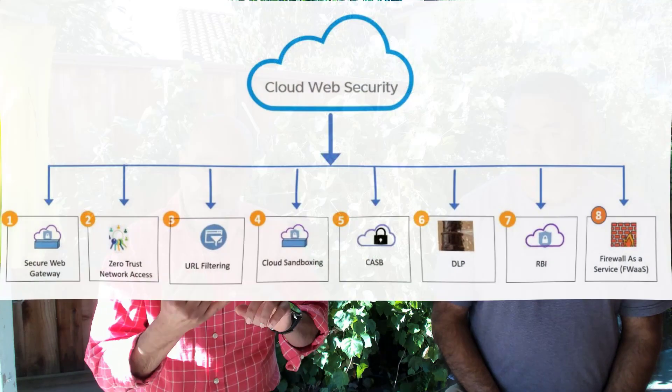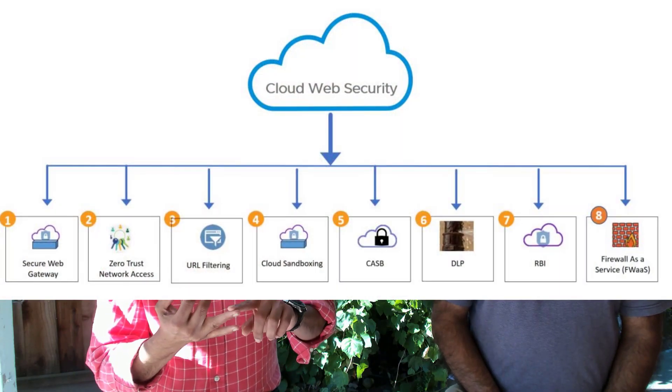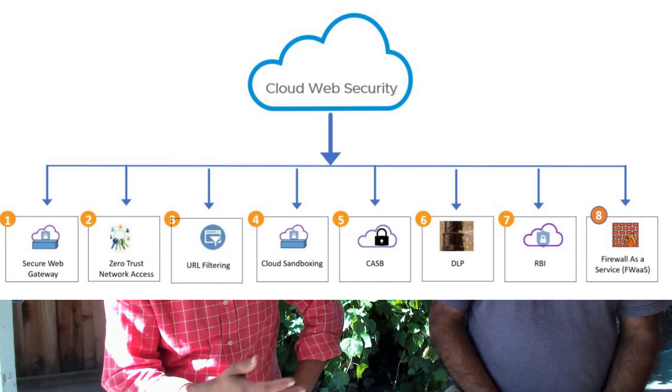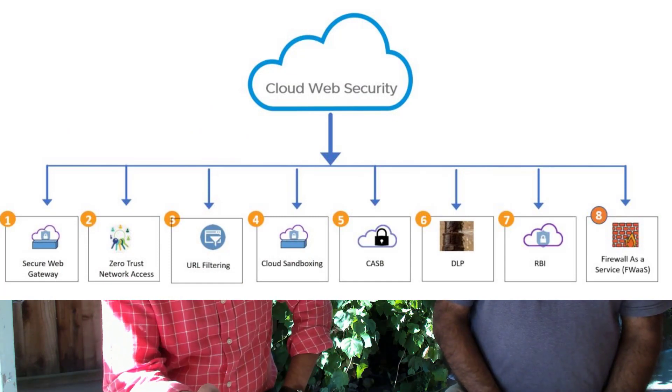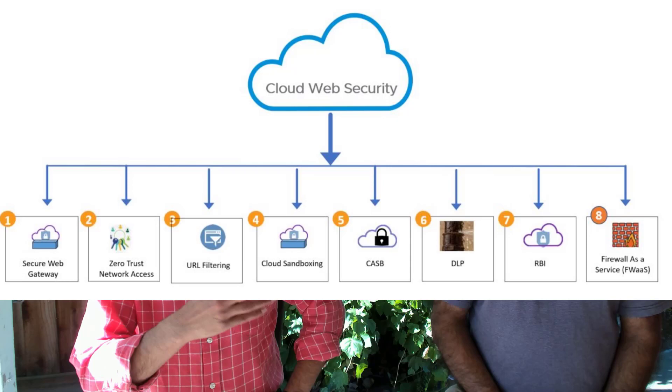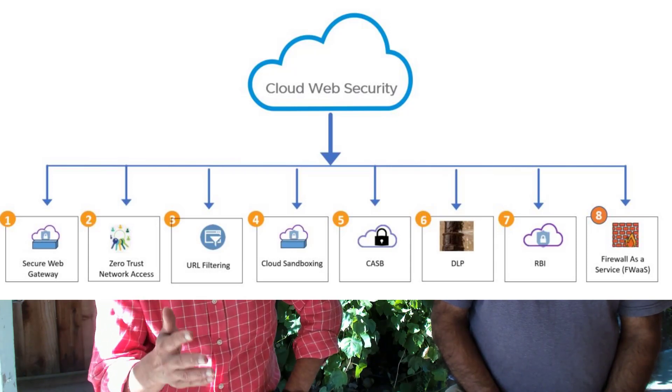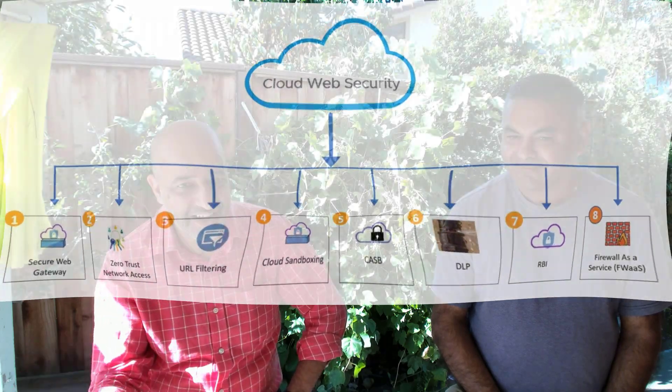some of the components for cloud security are: secure access, secure web gateway, CASB — which is cloud access security broker — DLP (data loss prevention or data leak prevention), sandboxing, RBI (remote browser isolation), and firewall as a service. Today we'll discuss briefly what each of these key components does and why they are important to you as an enterprise customer.